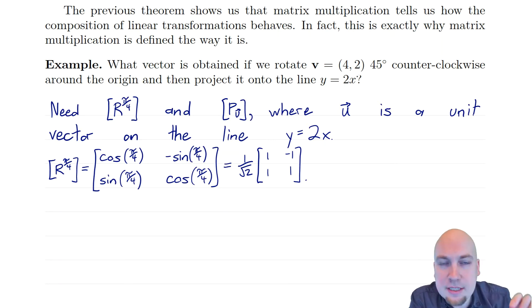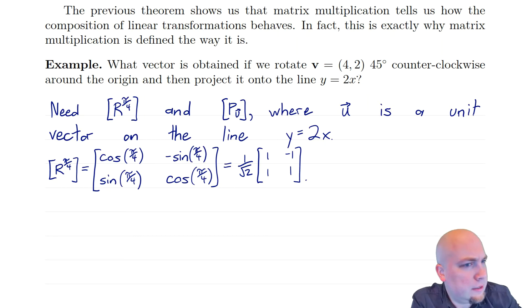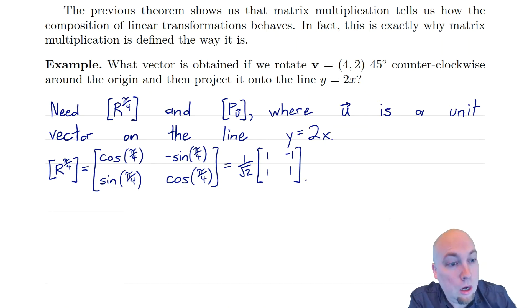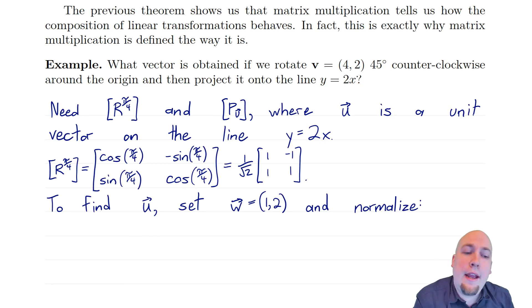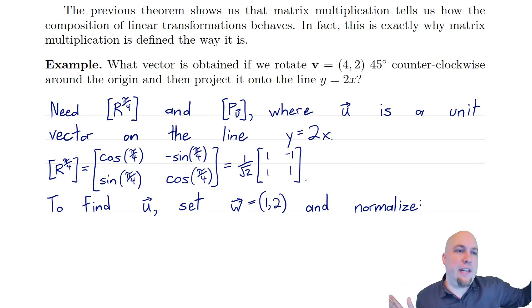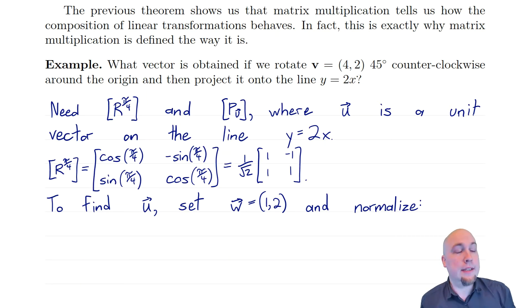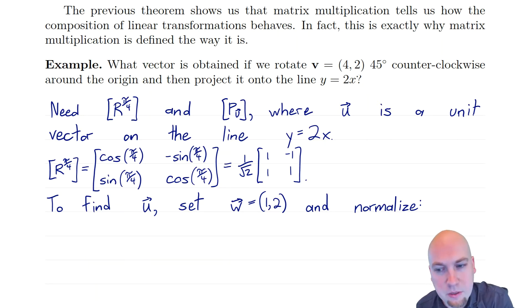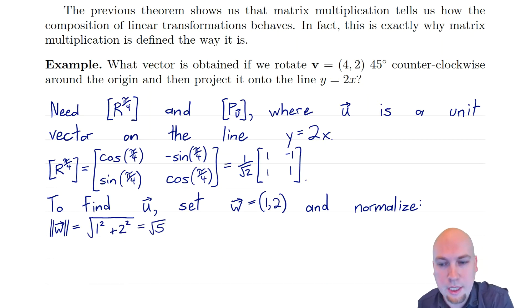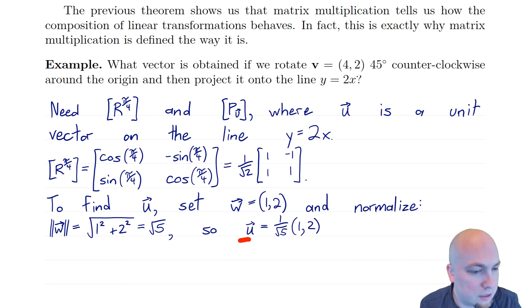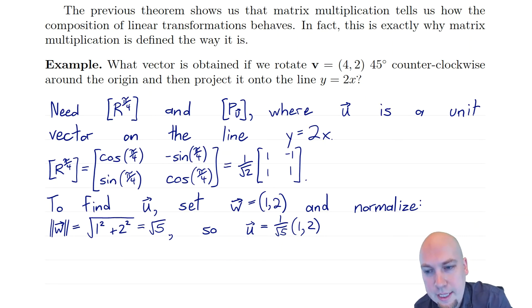The other matrix we need is the projection onto the line y equals 2x. This one's a little bit trickier because our formula for projections onto a line depends on having a unit vector on that line, not the formula for the line itself, so we'll have to do a little conversion. The first thing is to compute a unit vector u on this line y equals 2x. Start off with any vector on that line — its y component is double its x component — so I'll use the vector (1, 2). Then normalize it by dividing by its length, which is √5. So u, our unit vector, is (1/√5)(1, 2) — that's a unit vector on the line y equals 2x.